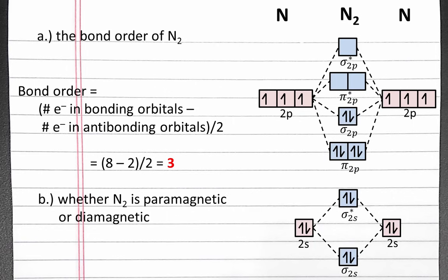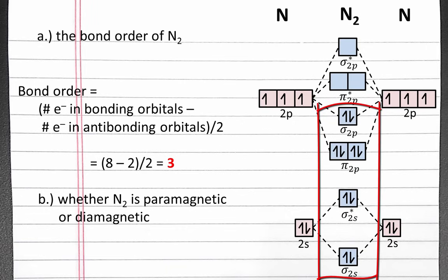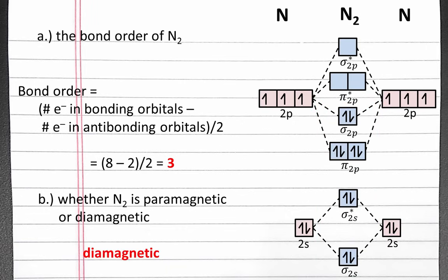For part b, we want to know whether N2 is paramagnetic or diamagnetic. In a diamagnetic molecule, all electrons are paired in orbitals. In a paramagnetic molecule, there is at least one electron that is not paired. Although each nitrogen atom individually has 3 unpaired electrons in its 2p orbital, in the N2 molecule all of our electrons are paired, so N2 is diamagnetic.